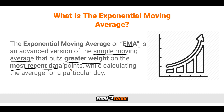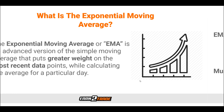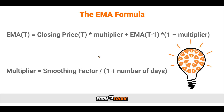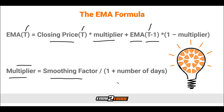Just like the simple moving average, the EMA can also be customized to the trader's needs and wants. For my math-savvy traders out there, this is the formula of exactly how the exponential moving average is calculated, as well as the multiplier. T is representative of the instance that needs to be calculated, meaning T minus one is the previous instance — hence the minus one portion. We have our closing price, our multiplier plus our EMA, and then our one minus our multiplier. Our multiplier is our smoothing factor divided by one plus the number of days. The math for calculating the EMA isn't overly complicated, but it is not something that you will most likely ever need to do manually.